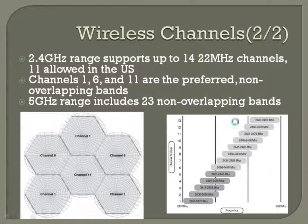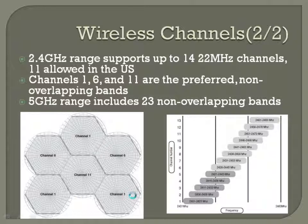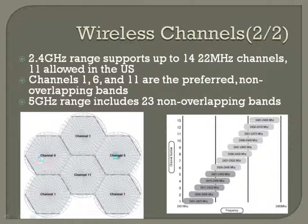There are a couple of other non-overlapping options you could use, but 1, 6, and 11 are the best to get the most for your money. If you need to set up a large mesh design with multiple access points to cover a large geographical area, you'll want to use a layout like this — channel 1 here, channel 6 here, channel 11, channel 1, channel 6, channel 1 — so that none of the channel 1s, 6s, or 11s are overlapping each other.